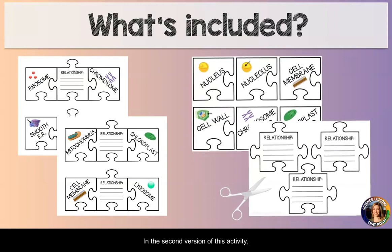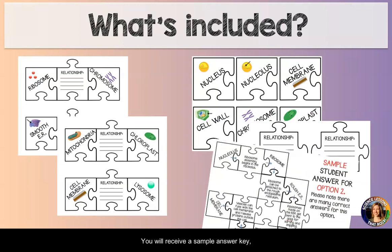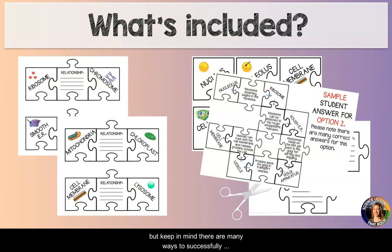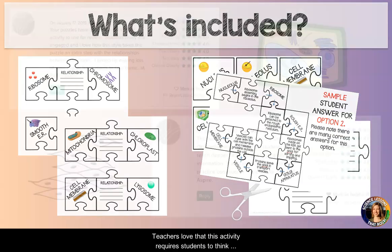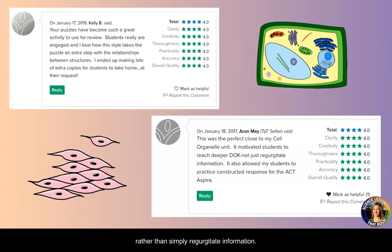In the second version of this activity, teachers will hand students cut-out puzzle pieces and they will need to identify which organelles work together and piece them together on their own. The more they can connect, the better. You will receive a sample answer key, but keep in mind that there are many ways to successfully complete this activity. Teachers love that this activity requires students to think deeply about organelles and cell processes rather than simply regurgitate information.